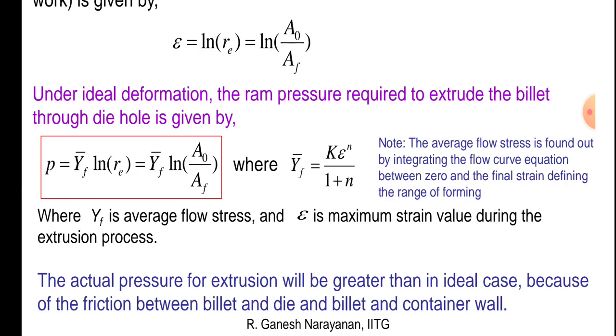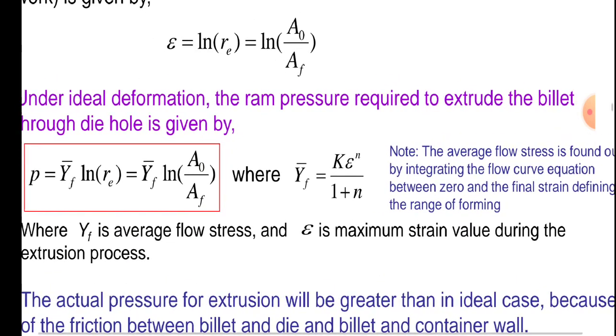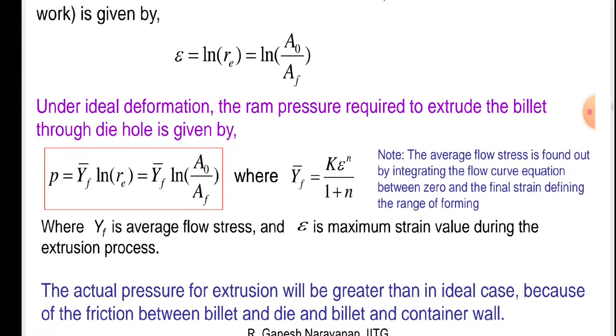Note: the average flow stress is found out by integrating the flow curve equation between zero and the final strain defining the range of forming. Where Yf is average flow stress and epsilon is maximum strain value during the extrusion process.